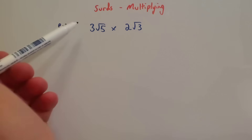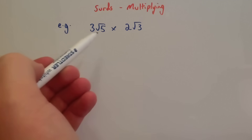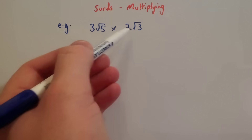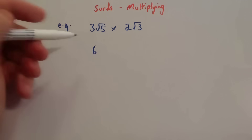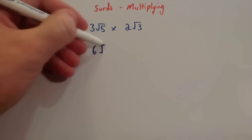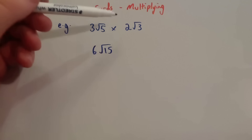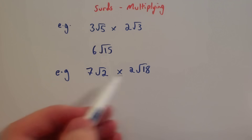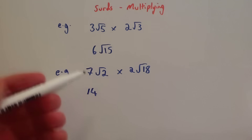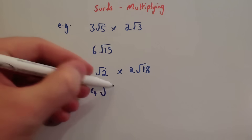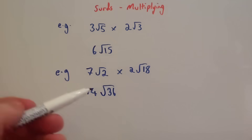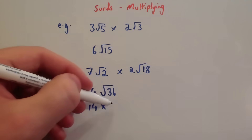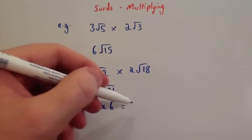Sometimes you have to multiply surds that have got numbers in front of them. So 3 root 5 multiplied by 2 root 3 — to multiply them, you just multiply the numbers and then multiply the surds. So 3 times 2 is 6, and root 5 times root 3 is root 15. So 3 root 5 times 2 root 3 would be 6 root 15. Now, 7 root 2 times 2 root 18 — multiply the numbers at the front: 7 times 2 is 14. Root 2 times root 18 would be root 36. The square root of 36 is 6, so you do 14 times 6, which equals 84.